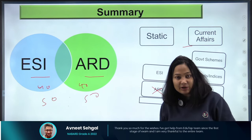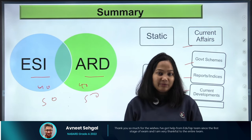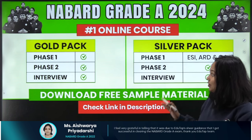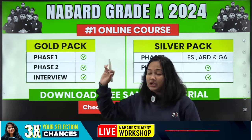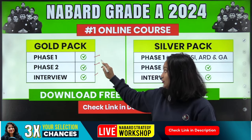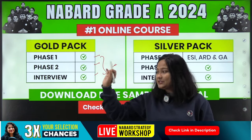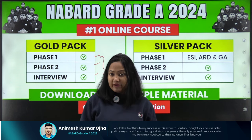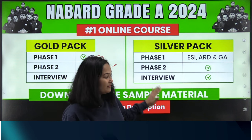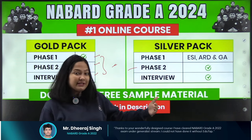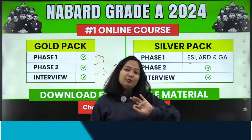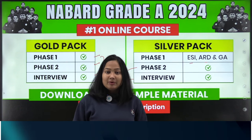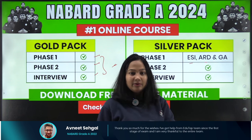That will be it from my side. If you have any questions or doubts, do let me know in the comment section. If you are struggling with which material to prepare from, we have two packages: the Gold Package, which gives complete preparation of Phase 1, Phase 2, and Interview with complete hand-holding; and the Silver Package, for those who are comfortable with Quant, Reasoning, and English but struggling for Phase 2 — covering Phase 2 subjects along with the merit section of ESI, ARD, and GA, plus complete interview preparation. Go to the description box to find the link.